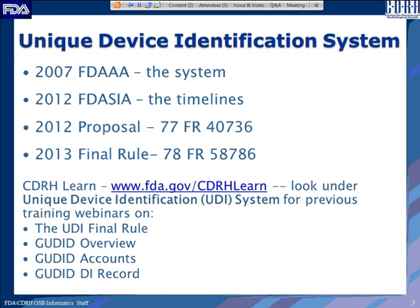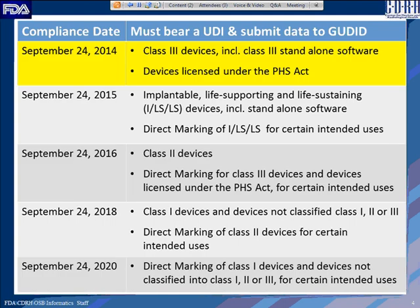This training module is best viewed sequentially after prior GoodID webinars. Compliance dates are all September 24th, running through 2016, then 2018 and 2020. The right-hand column shows the class of device that must bear a UDI on the label and submit data to GoodID. Our immediate focus is the first row — Class 3 devices and devices licensed under the Public Health Act, due to be submitted to GoodID by September 24th.